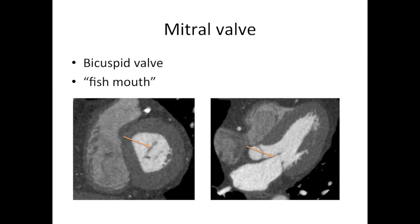The next valve as you pass through the heart is the mitral valve. This is the left atrioventricular valve and it has what's called a fish mouth appearance on short axis imaging — that wide oval opening — and you can see it on the CT scan and the axial pictures as well.